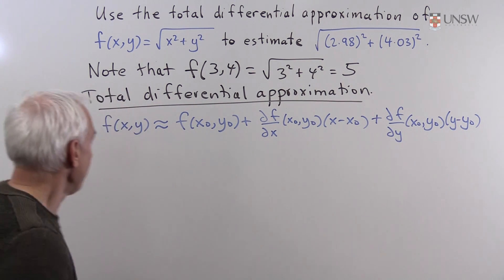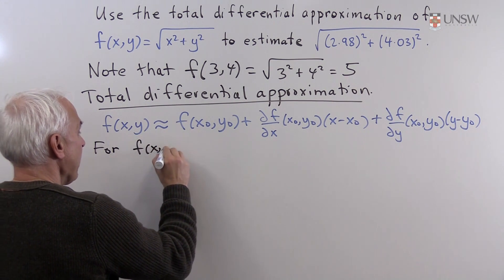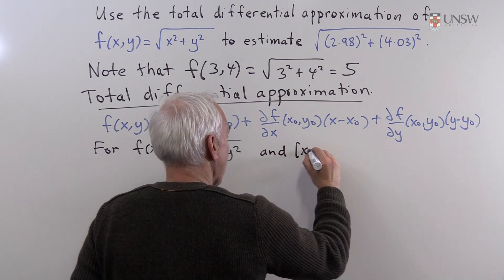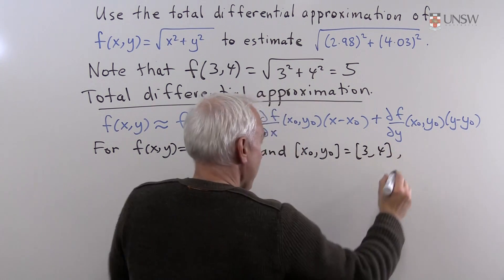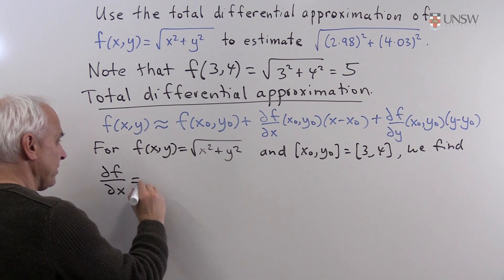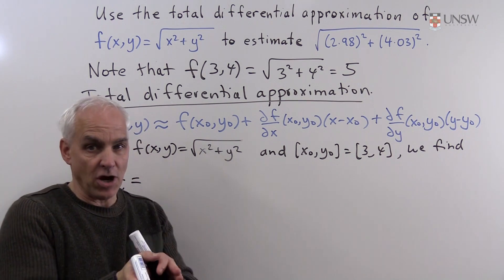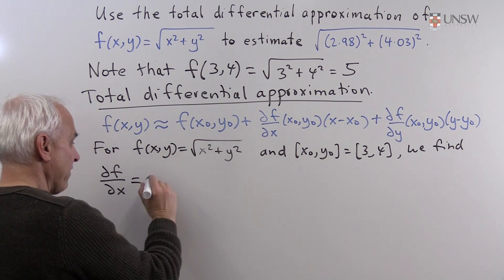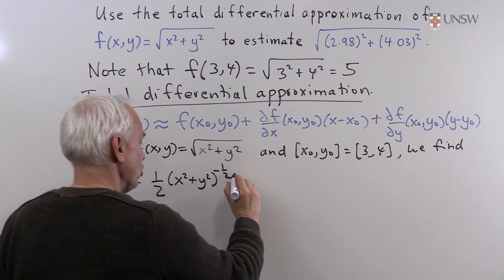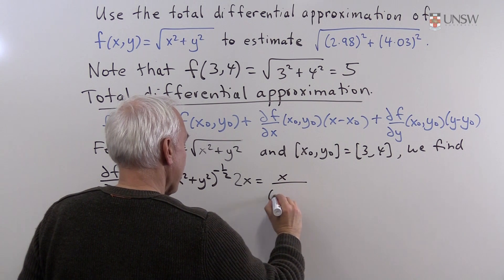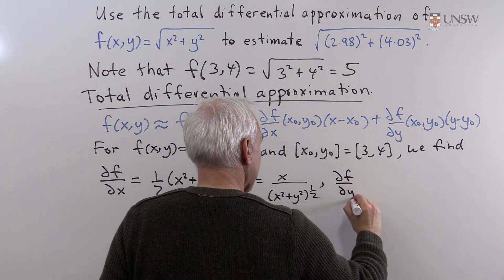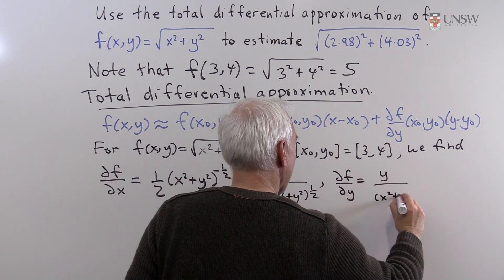Now let's apply this to our situation. For f(x, y) = √(x² + y²), using base point (x₀, y₀) = (3, 4), we find the partial derivatives. The partial of f with respect to x is x / √(x² + y²), obtained by the chain rule. Similarly, the partial of f with respect to y is y / √(x² + y²).